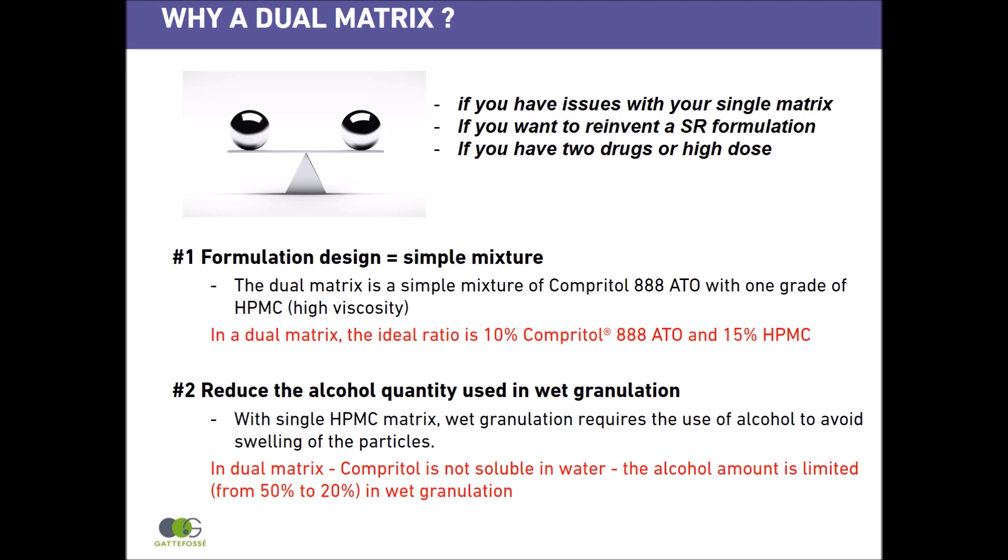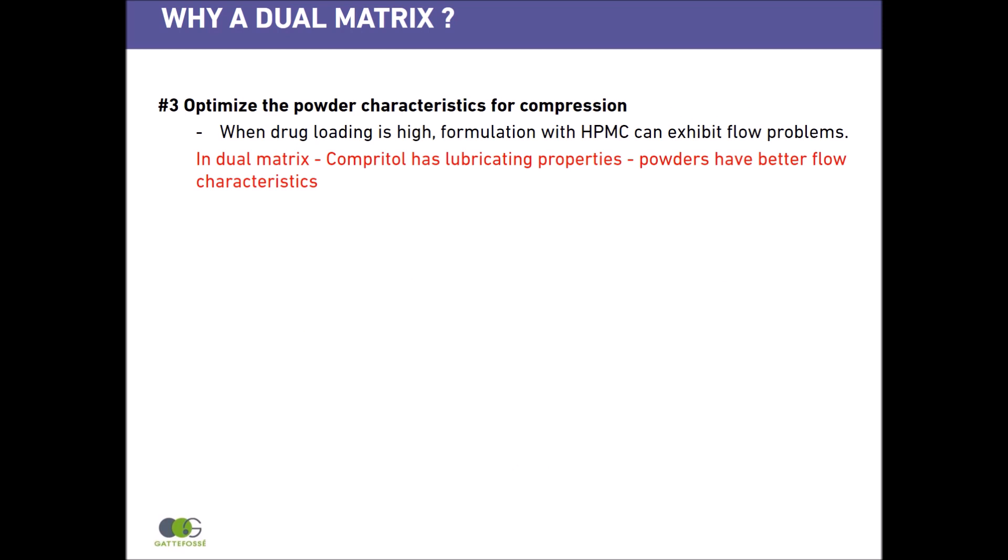In dual matrix, Compritol is not soluble in water, so the alcohol amount is limited from 50% to 20%. Dual matrix can also help you to optimize the powder characteristics for compression. For example, when developing a high drug dose formulation with HPMC, you can exhibit flow problems. In dual matrix, Compritol having lubricating properties means powders have better flow characteristics.